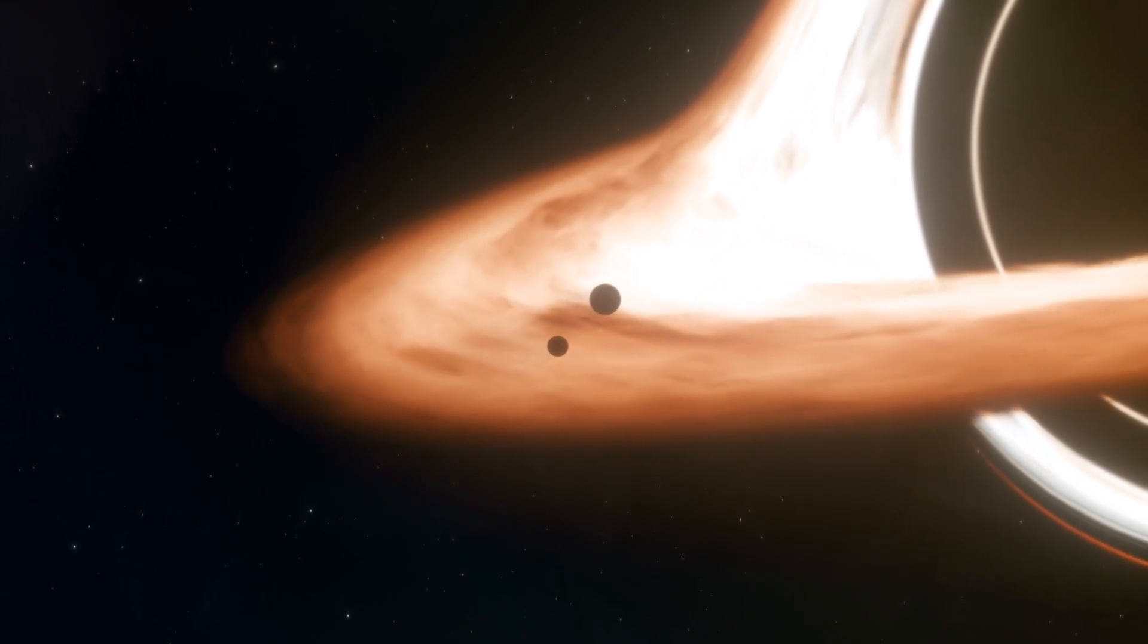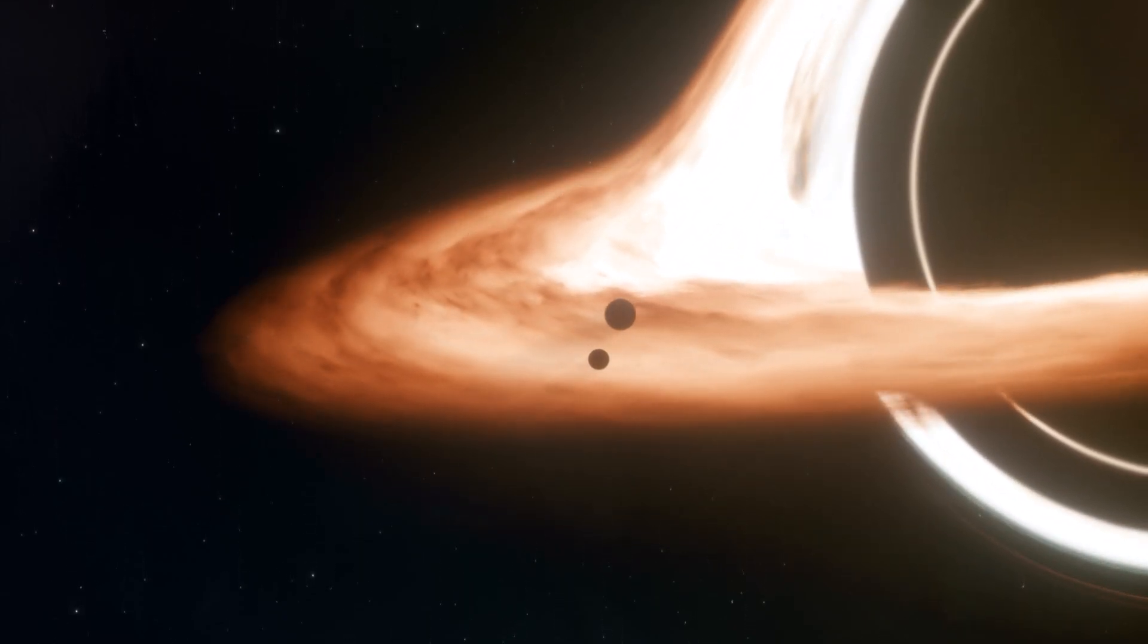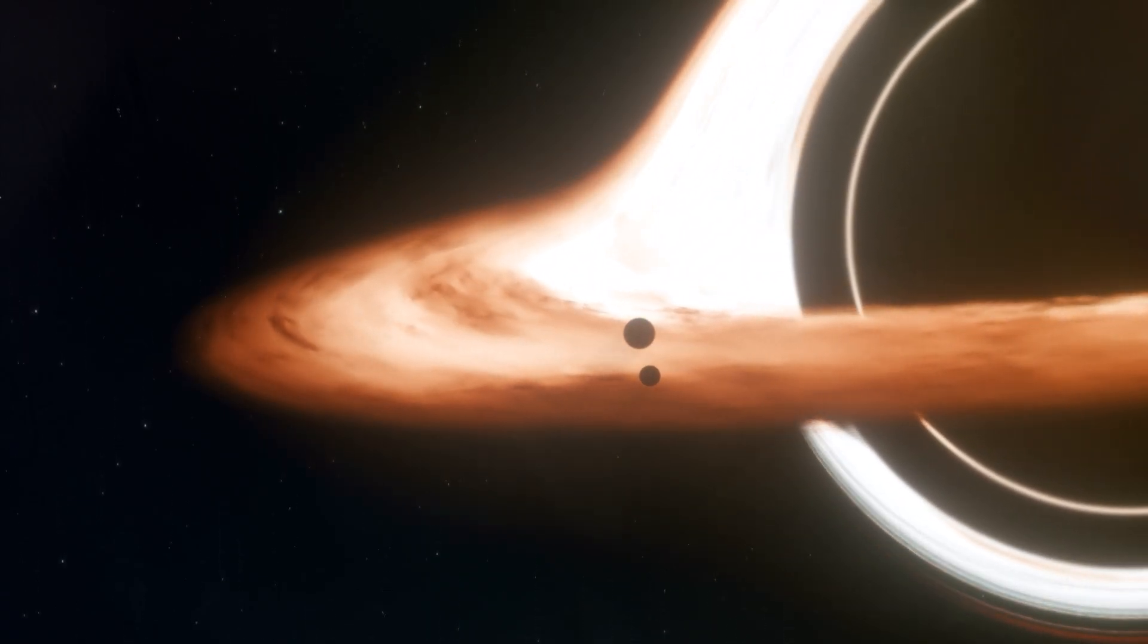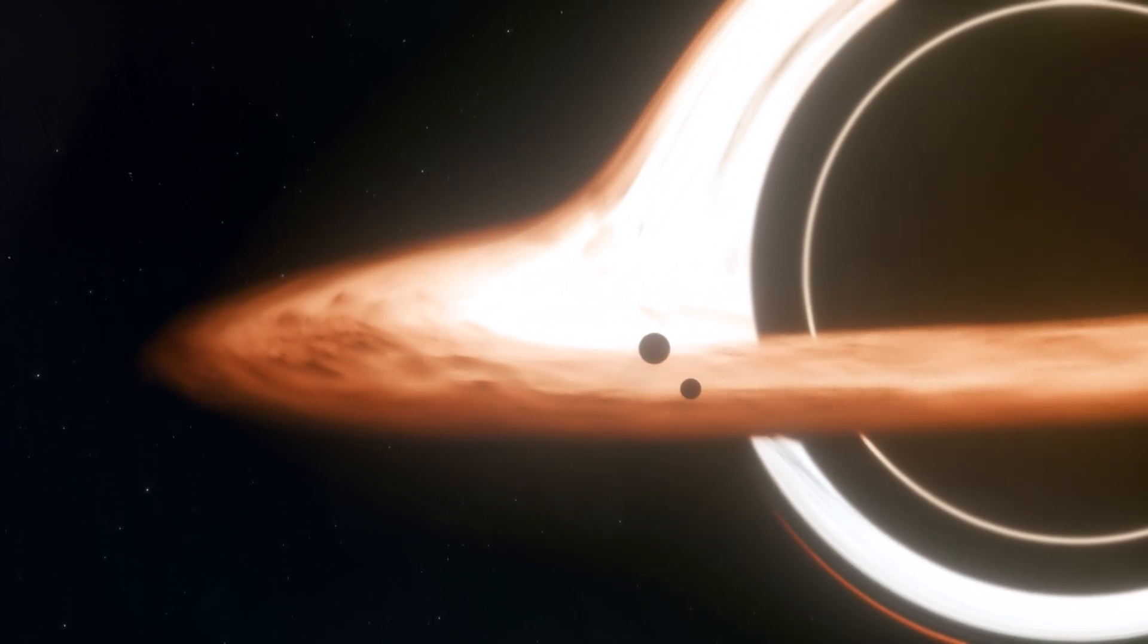There's a planet near a massive black hole where time moves so slowly that one hour on the planet equals seven years on Earth. That's the kind of time dilation we're talking about here. It's like having the slowest clock in the universe right in front of you.